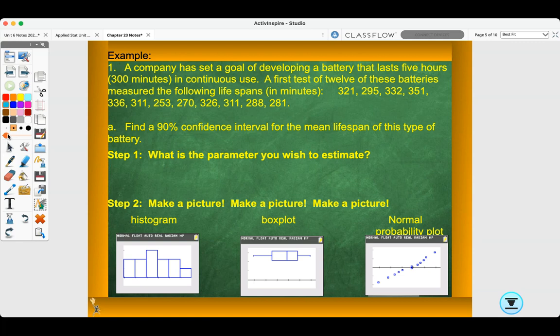We're going to go through an example. A company has set a goal of developing a battery that lasts 5 hours in continuous use. A first test of 12 of these batteries measured the following lifespans in minutes: 321, 295, 332, 351, 336, 311, 253, 270, 326, 311, 288, and 281. We want to find a 90% confidence interval for the mean lifespan of this battery. Step one: Define our parameter. Mu equals the true mean lifespan of this type of battery.